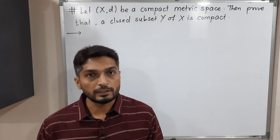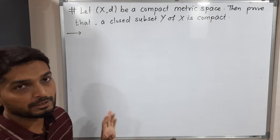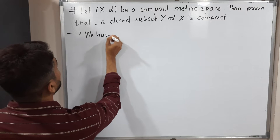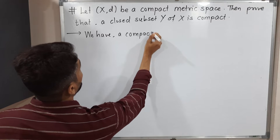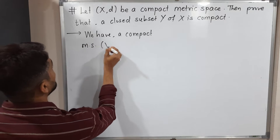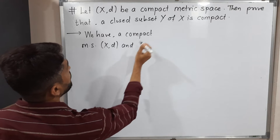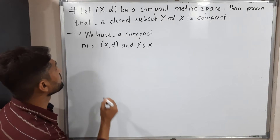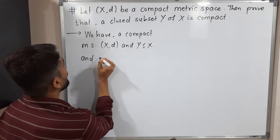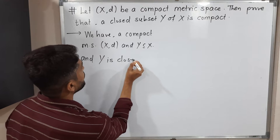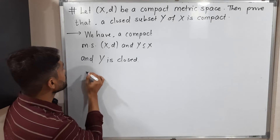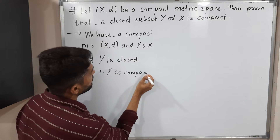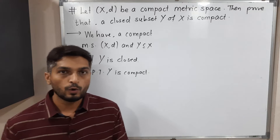Let us start with the given information. What they have given to us: X with metric d is a compact metric space. Y is a subset of X, and Y is closed. So Y is a closed subset of X, and we have to prove that it is compact — that every closed subset of a compact metric space is always compact.